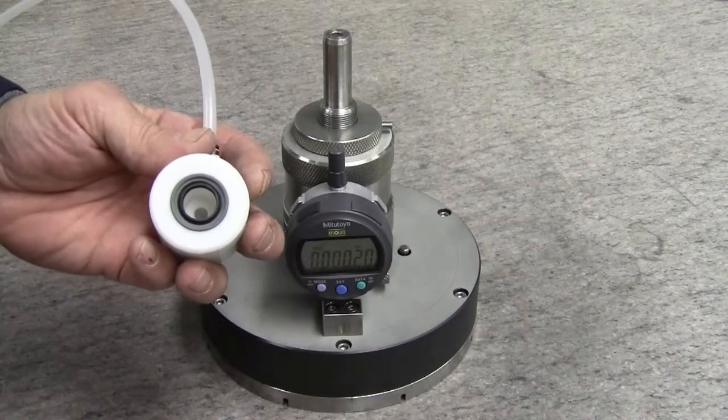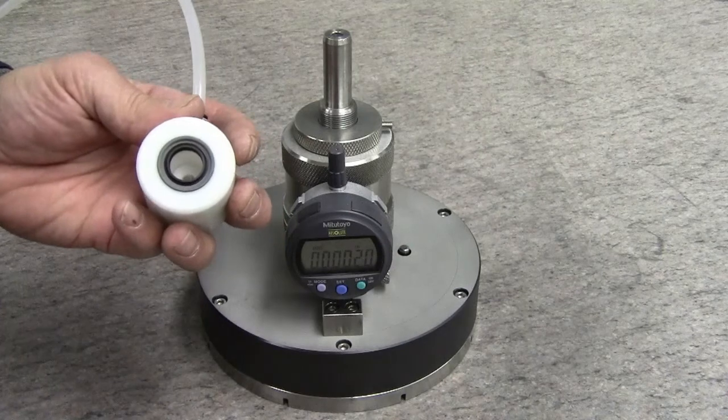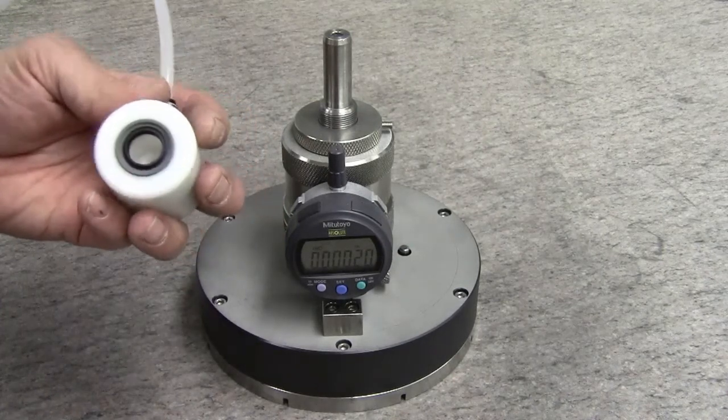This is our rotary union for the AccuPaw. It allows the AccuPaw to rotate and maintain vacuum against the wafer while in production.